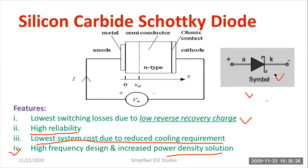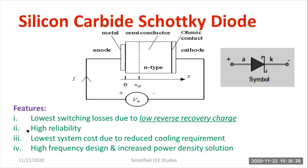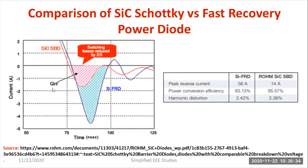High frequency design and increased power density solution, suitable for high frequency and high power application — these are the specialities. Moreover, it is available plenty in the market with no issues regarding unavailability. I have referred to a semiconductor company, downloaded the datasheet, and got a lot of information regarding silicon carbide Schottky diode.